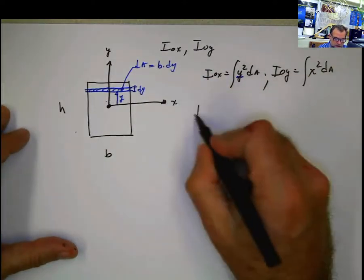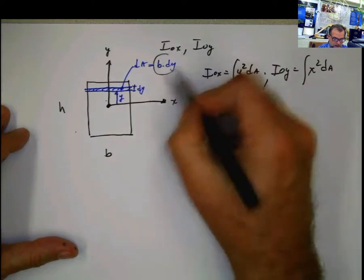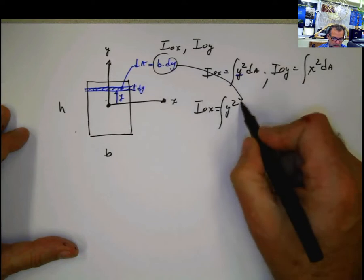Now, the rest is just plug and chug. Integral of y squared, dA. But dA is this. So I'm going to put that here, b dy.